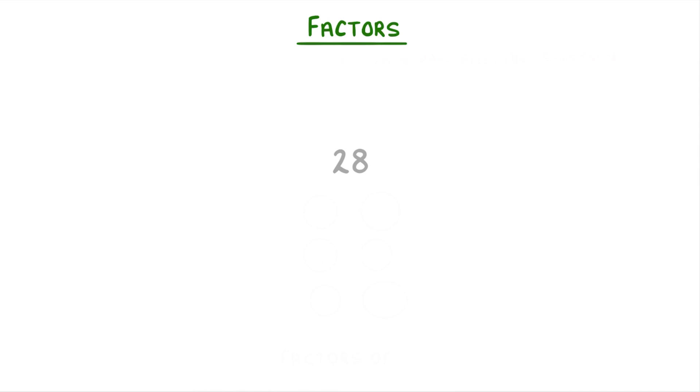Another way to think about the factors of a number are all the numbers that divide into it a whole number of times. For example, 4 is a factor of 28 because 28 divided by 4 is 7, which is a whole number. Whereas 5 isn't a factor because 28 divided by 5 is 5.6, so 5 doesn't go into it a whole number of times.